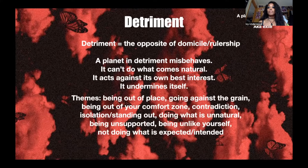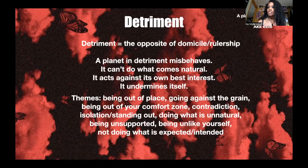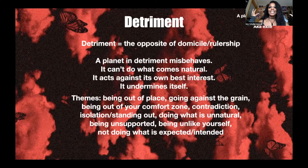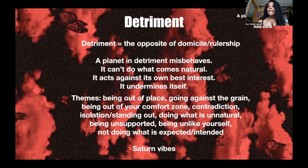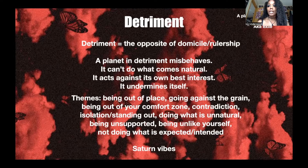If you have a planet in detriment, here are some themes that may show up in your life: being out of place, going against the grain, being outside of your comfort zone, contradictions, isolation, standing out, doing things unnatural for you, being unsupported, being in an environment that doesn't vibe with you or match your energy, being unlike yourself, not doing what is expected or intended. Planets in detriment have Saturn vibes — Saturn rules opposites, not fitting in, banishment, being on the outside looking in, or being the outsider amongst insiders.